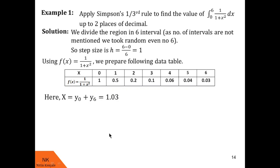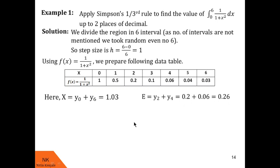Now let us calculate capital E. E is the sum of even ordinates, that is y₂ + y₄. We cannot take y₆ in E because y₆ is already utilized in X. So E = y₂ + y₄ = 0.26. Now let us calculate capital O. O is the sum of odd ordinates, that is y₁ + y₃ + y₅. When we add these ordinates, O = 0.64.